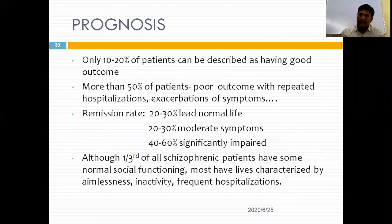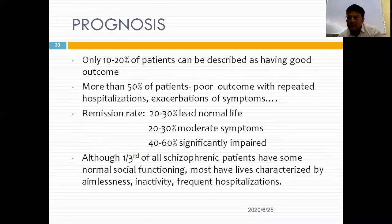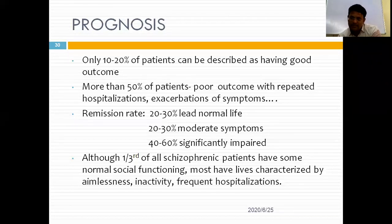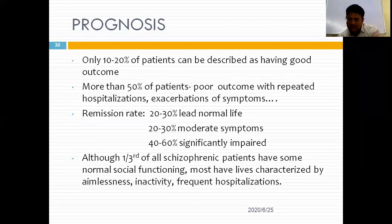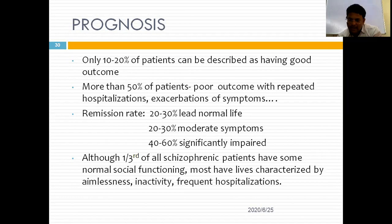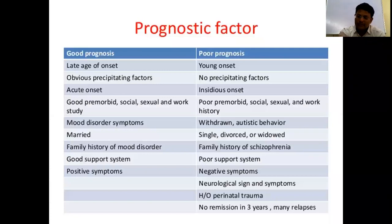The prognosis of schizophrenia is poor — only 10–20% of patients have a good outcome. More than 50% of patients have a poor outcome, with frequent repeated hospitalizations and exacerbations of symptoms. The remission rate is 20–30% in normal life and 20–30% in moderate functioning. Greater than 40–60% are significantly impaired, with frequent hospitalizations and prominent negative symptoms.